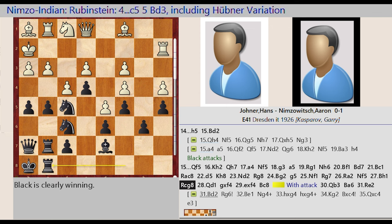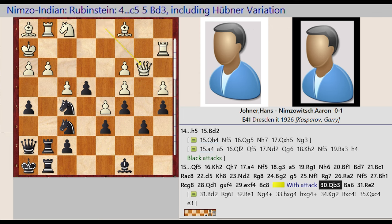Rc8, Qd1, g takes f4, e takes f4, Bc8 with attack. Qb3, Ba6.